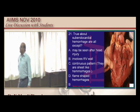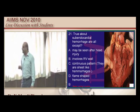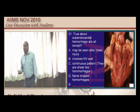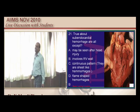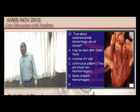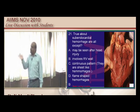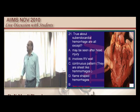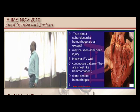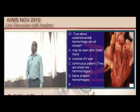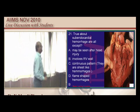Where do you find subendocardial hemorrhages? We find them generally in cases of trauma, but it is the left ventricle which classically shows them rather than the right ventricle. That is the classical location for subendocardial hemorrhages.